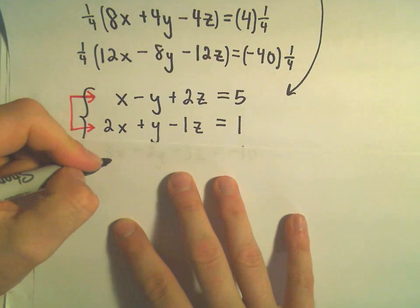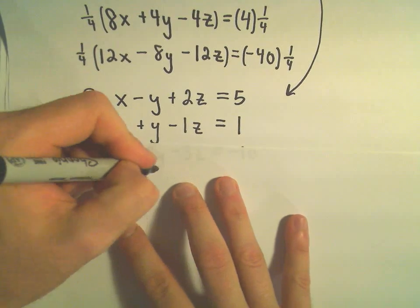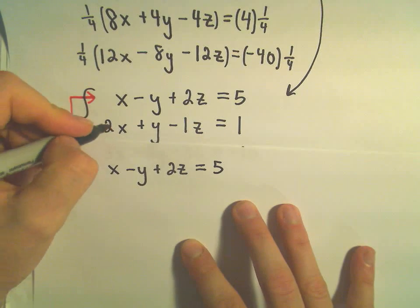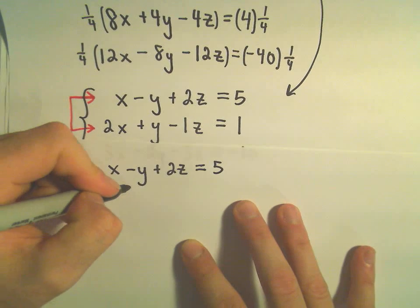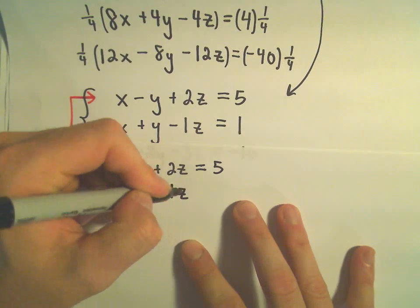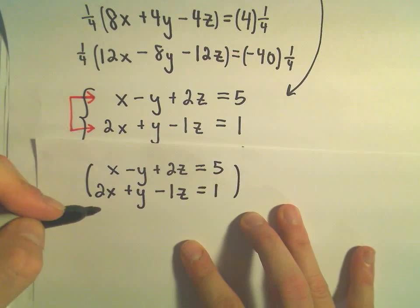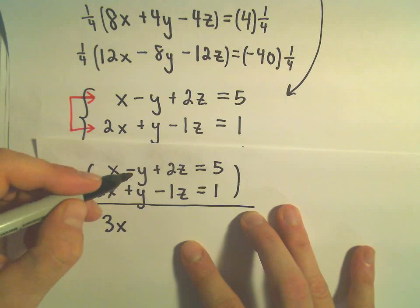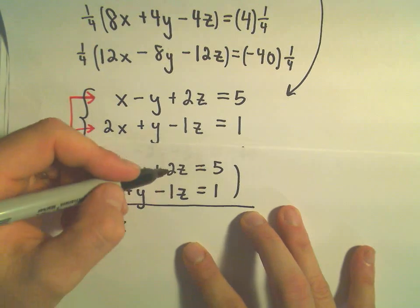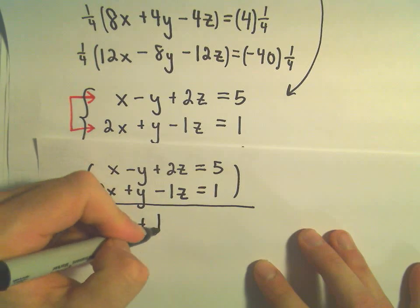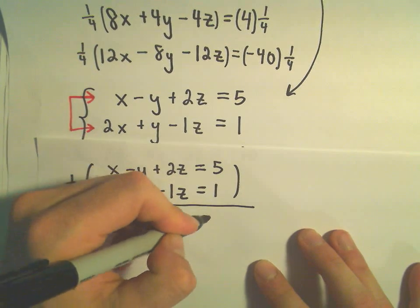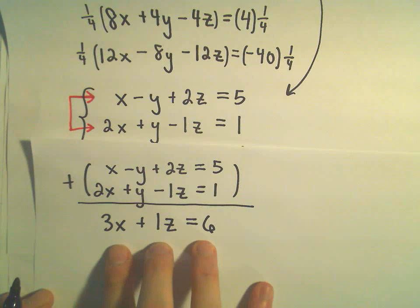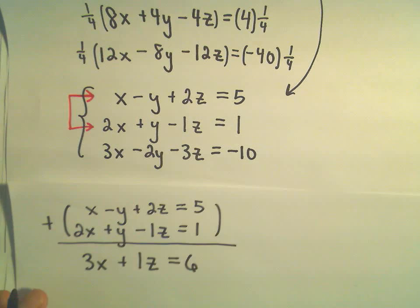So let's see, if we've got x minus y plus 2z equals 5, and then my other equation, 2x plus y minus 1z equals 1. If we just add those up immediately, 1x and 2x will be 3x. Our y's will cancel out. We'll have 2z minus z, which will still leave us with positive 1z. And then we're left with 6. So we've got one of our, we've now got an equation involving only two variables. So that's good.